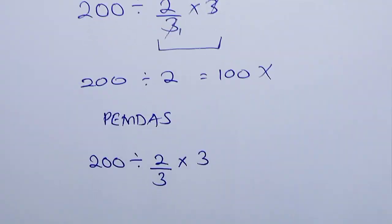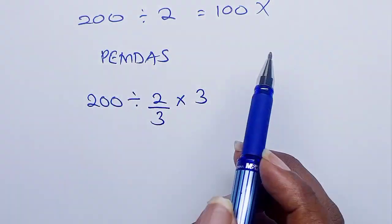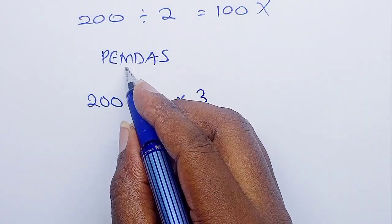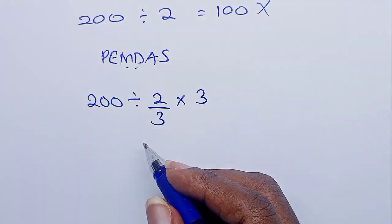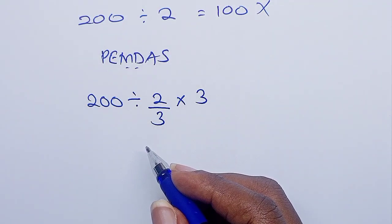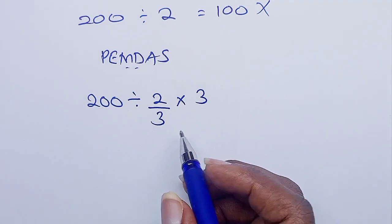We don't have parenthesis, we don't have exponents. What we have next is multiplication and division. Whichever comes first is what you work out first from the left side to the right side. And as you can see, division comes first, so you're supposed to work out this first.